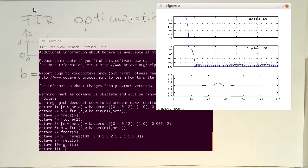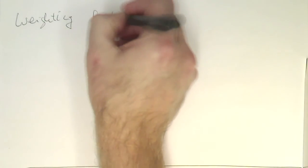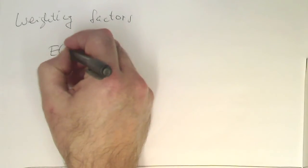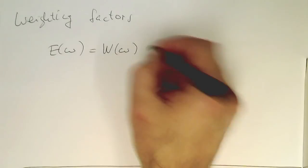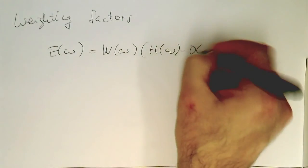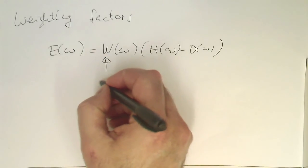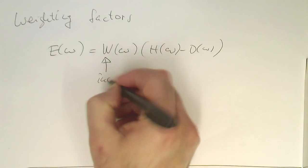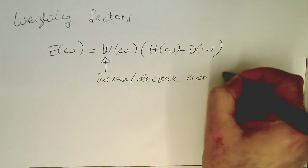Now the interesting aspect of this one is that we can control the ripple. The special aspect about the Parkes-McClellan algorithm are the weighting factors. Remember that our error function E was defined as W omega times H omega minus D omega.